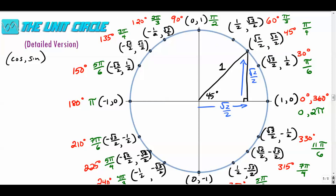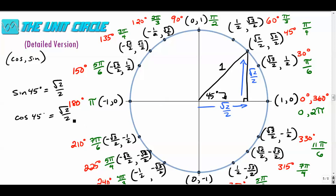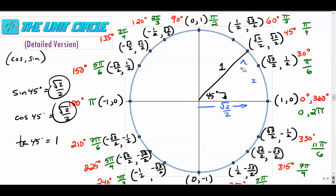The sine of 45 degrees is opposite over hypotenuse, which is radical 2 over 2. The cosine of 45 degrees is adjacent over hypotenuse, which happens to be the same: radical 2 over 2. The tangent of 45 degrees is sine over cosine, which equals 1.